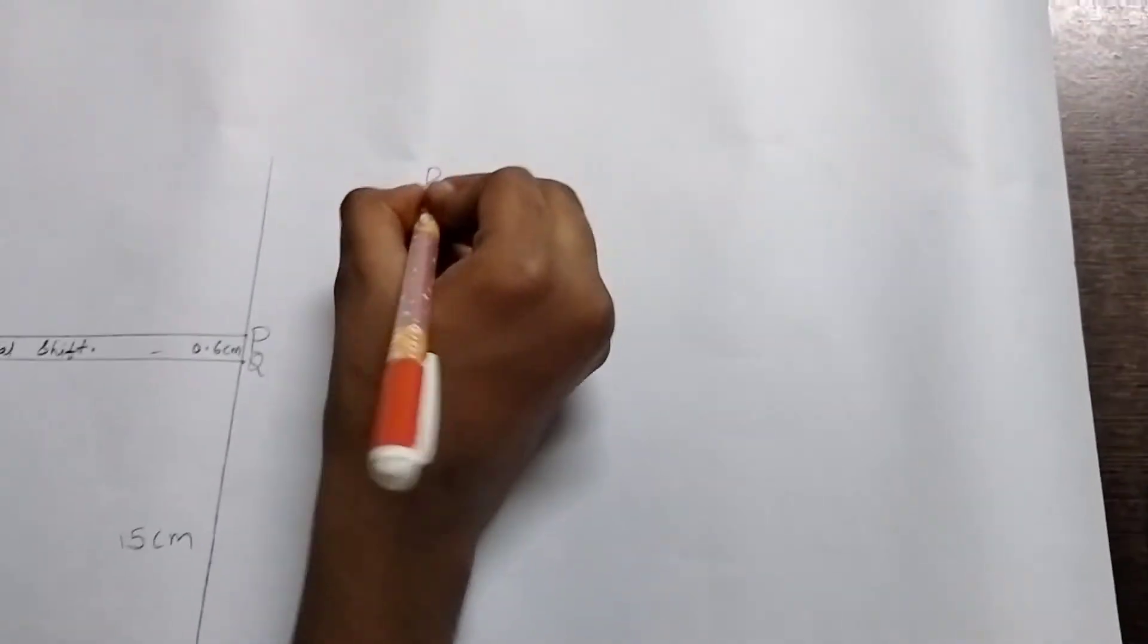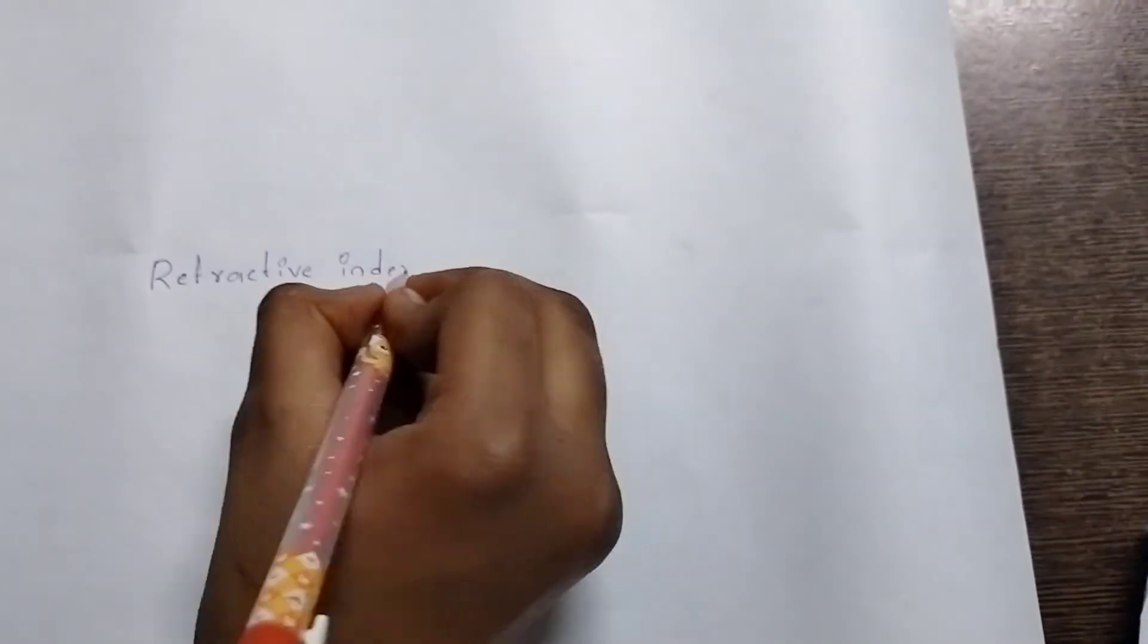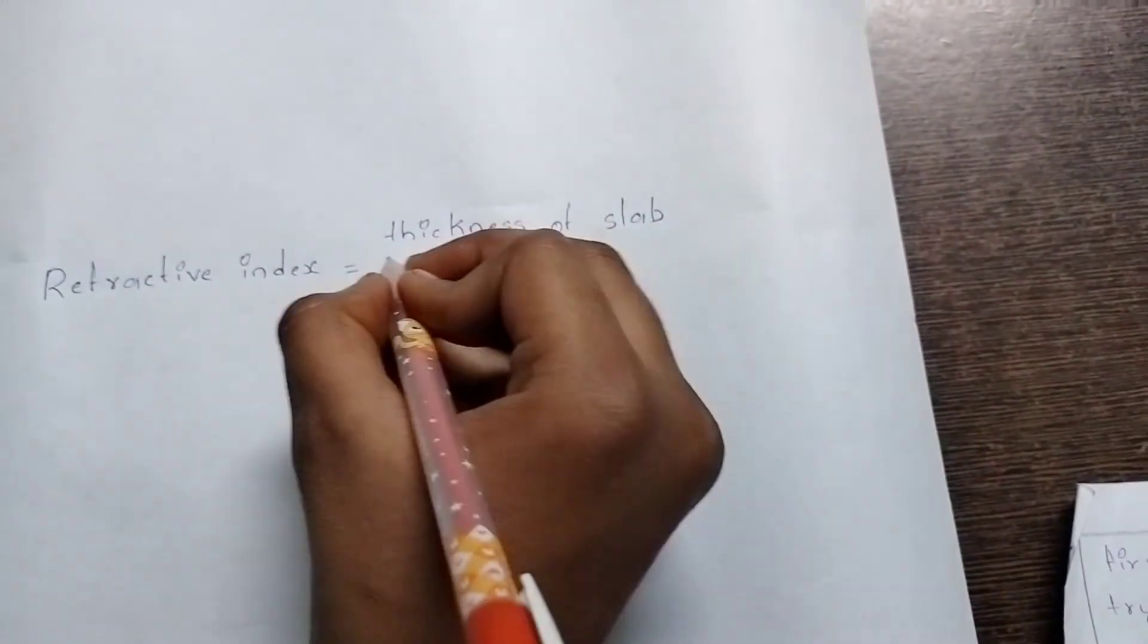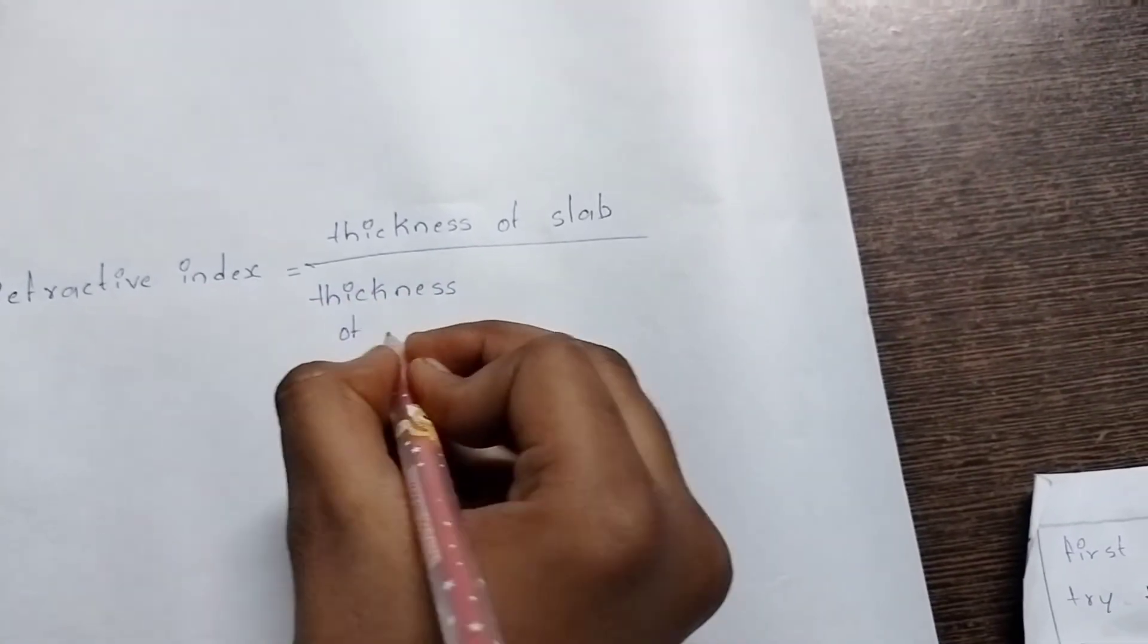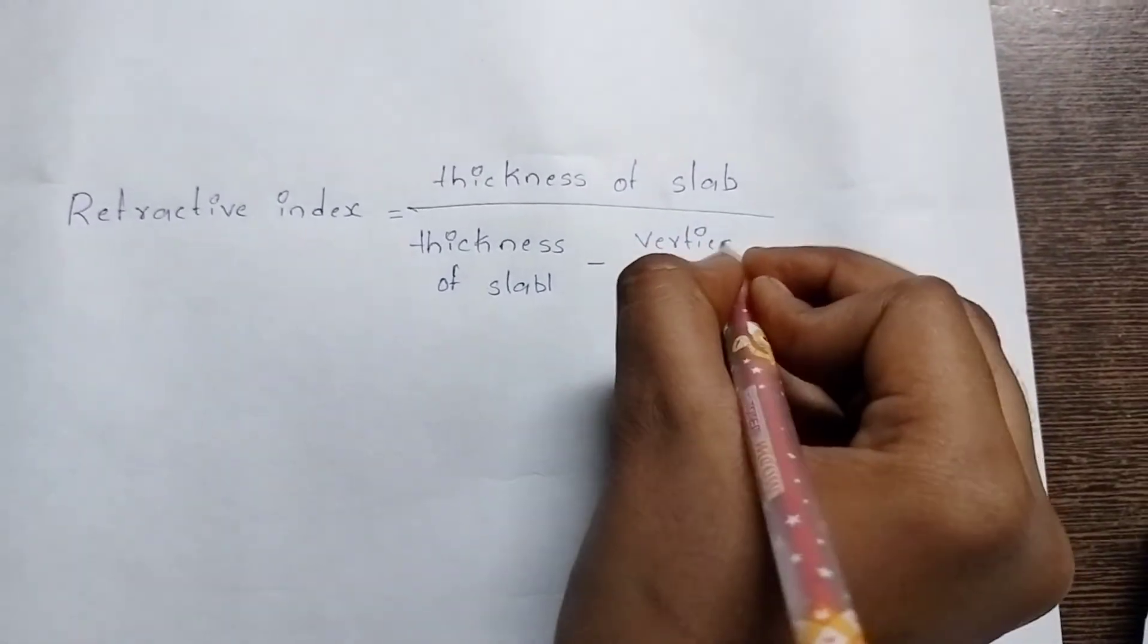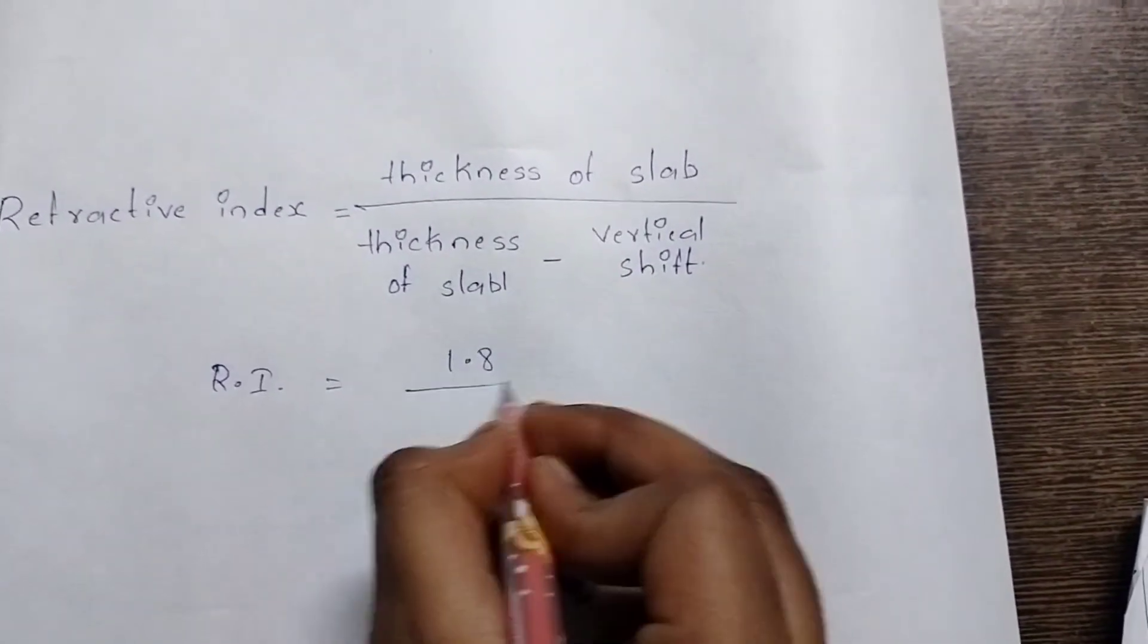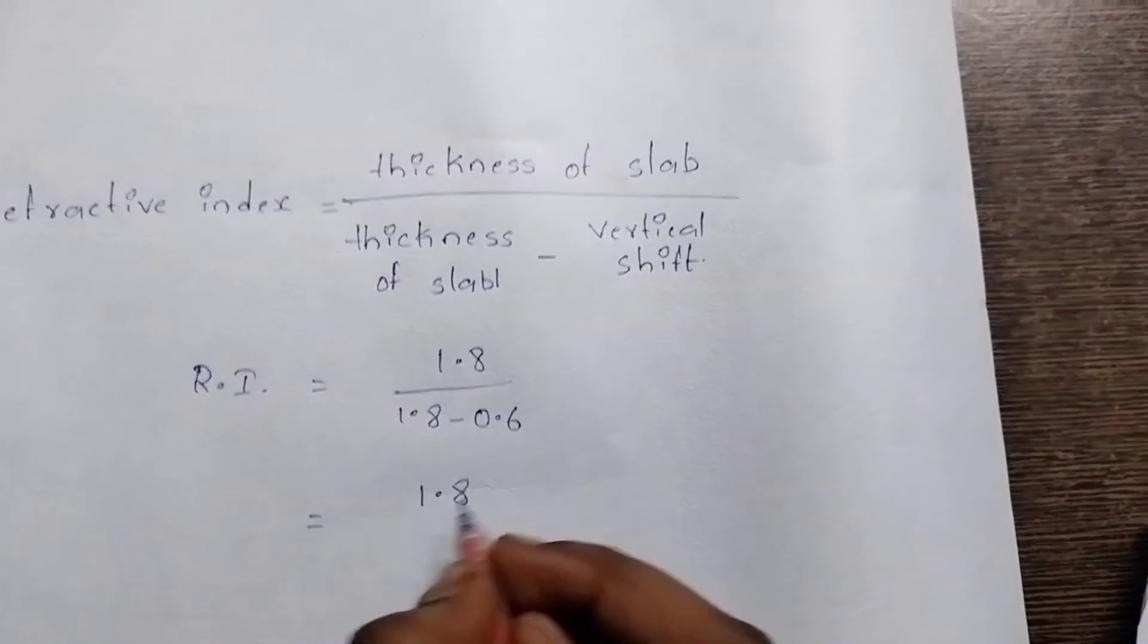Refractive index. Refractive index of the glass slab is equal to thickness of the glass slab by thickness of the slab minus vertical shift. We got it for both cases is 0.6 cm. We already measured the thickness of the slab. That is 1.8 cm is the thickness of the slab. 1.8 cm by thickness of the slab is 1.8 cm minus vertical shift, we got it for both cases is 0.6 cm.